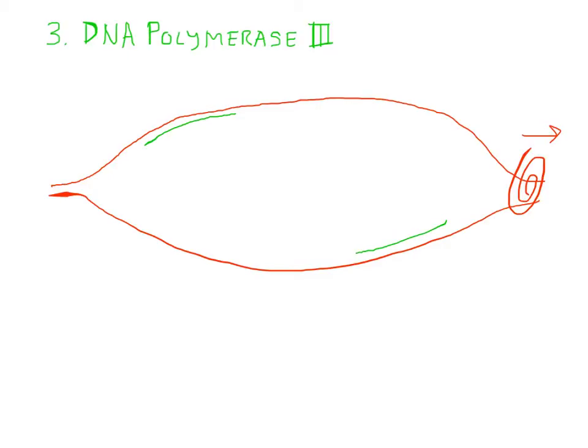DNA polymerase 3 locks on here and also travels in the same direction as the helicase. We'll put the DNA polymerase enzyme right there going that direction, and its job is to add letters of DNA.